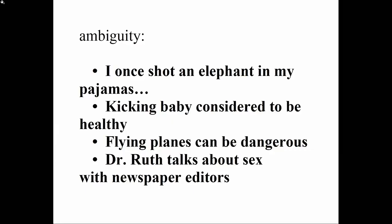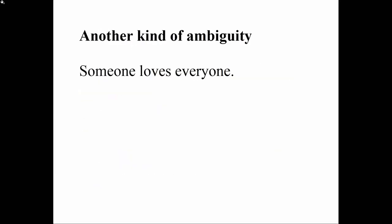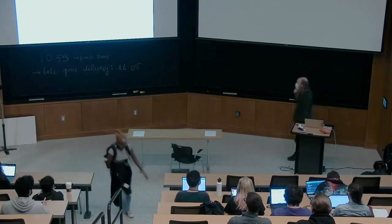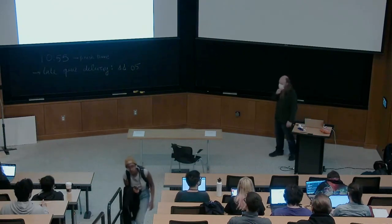But there's another kind of ambiguity that's the one I want to talk about today. People have claimed that this sentence is ambiguous: 'Someone loves everyone.' The claim is this can mean at least two things.